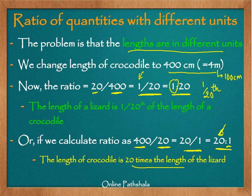The other case is where the numerator is bigger than the denominator. This means that the quantity being compared is bigger than the quantity against which it is being compared. So when we have the length of the crocodile compared to the length of the lizard, the crocodile's length is 20 times bigger than the lizard's length.